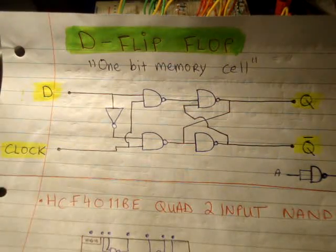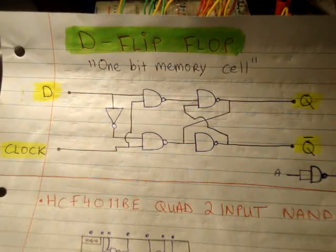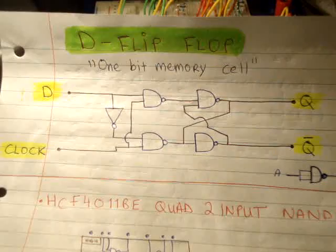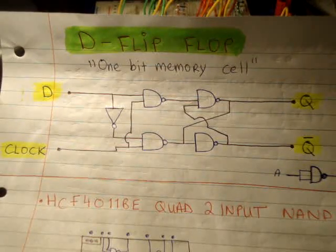To be honest, you could actually ignore that output. You don't even need to have an indicator on it because it just means that this one is the opposite of Q. So it's not a big deal at all.